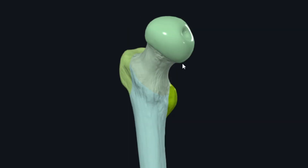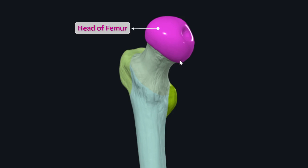In the upper end of the femur bone you can see this somehow spherical bony part, which is about two-thirds of a sphere. This spherical bony part is the head of the femur, and it articulates with the acetabulum of the os coxae to form the hip joint. In the center of the head of the femur is a small depression called the fovea capitis, which serves as the attachment site for the ligament of the head of the femur. Part of the blood supply to the head of the femur from the obturator artery is conveyed along this ligament and enters the bone at the fovea capitis.